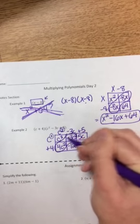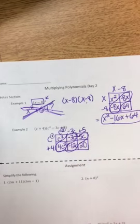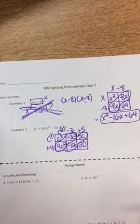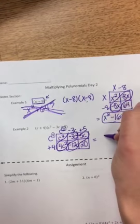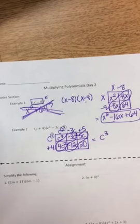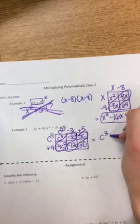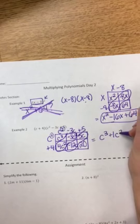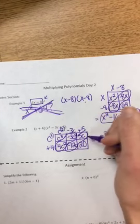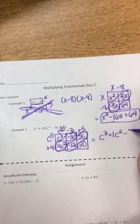So, still my diagonals have like terms. I just have two sets now. The c squareds and the c's. So, my final answer would be c to the third power. 4 minus 3 is positive 1c squared. Negative 12c plus 5c is a negative 7c. And, plus 20.